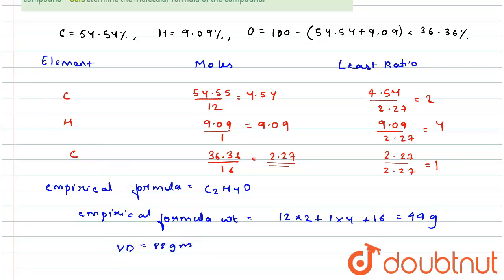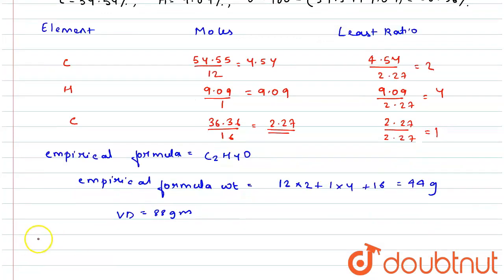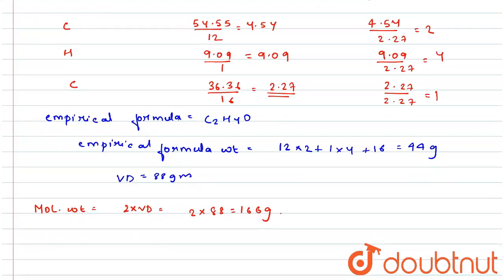Okay, now we know that molecular weight is equal to 2 into vapor density. Molecular weight is equal to 2 into vapor density, that means 2 into 88, so 176 grams.